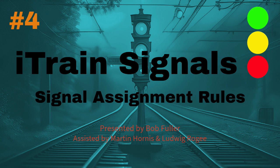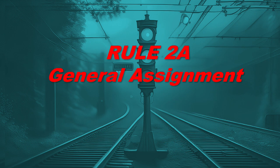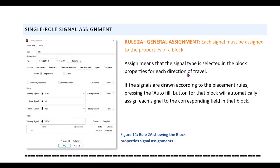It is assumed that the signals have already been drawn in the switchboard and defined. Welcome back. So let's jump straight in with Rule 2a, General Assignment. It states that each signal must be assigned to the block properties. Assign means the signal name is selected in the appropriate signal field for the direction of travel within a block's properties.